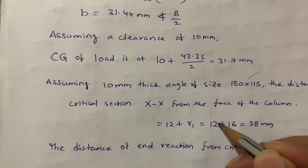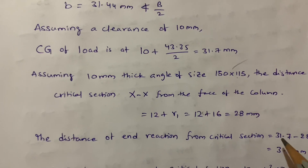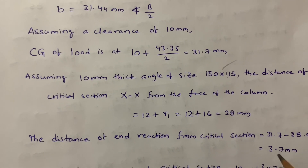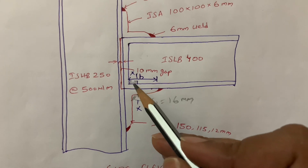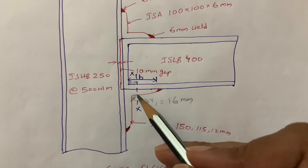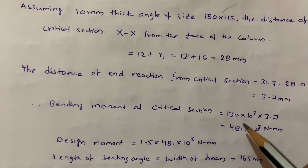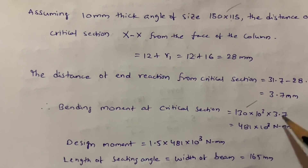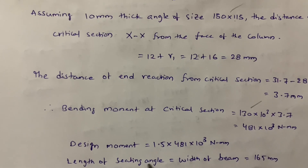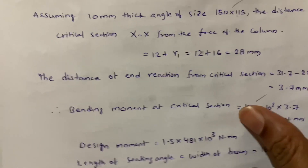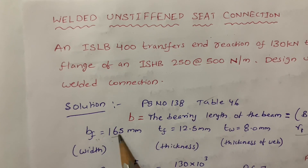Note: the flange thickness is actually 12.5 mm but I took it as 12 mm — this is acceptable. The distance of end reaction from the critical section is 31.7 minus 28 mm, giving 3.7 mm. The bending moment at the critical section is force × perpendicular distance: 130 × 3.7. The factored design moment is 1.5 times that value. The length of the seating angle equals the width of the beam, BF = 165 mm.